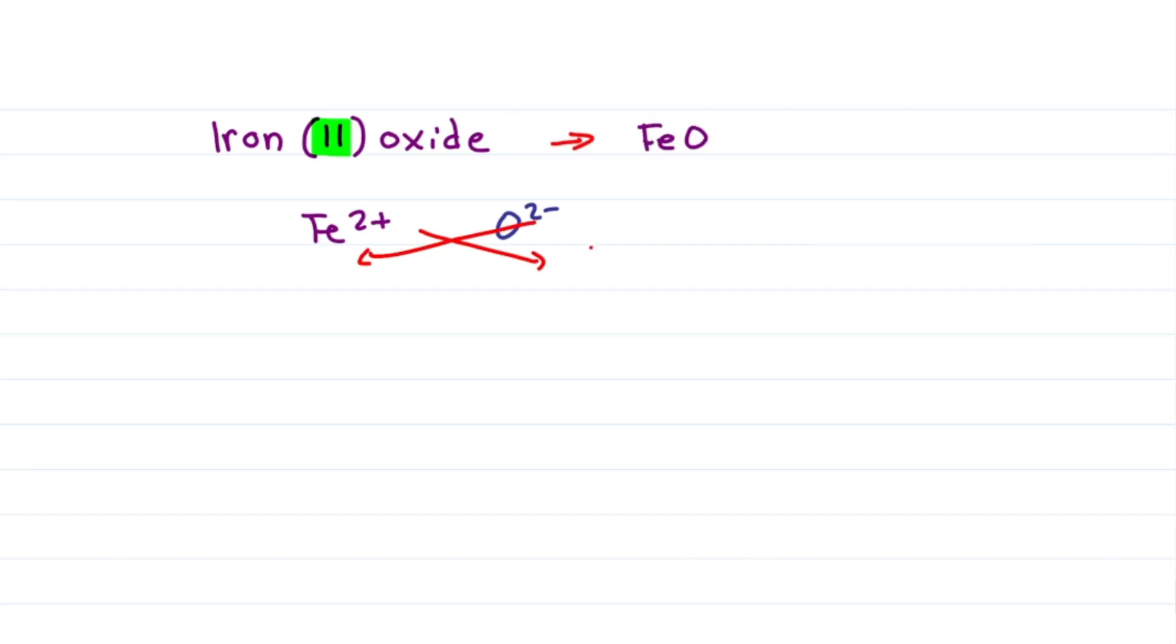You can also do the crisscross method. I get Fe2O2, but with ionic compounds it's not one atom to one atom. It's hundreds of atoms in that ratio, and so we always use the lowest possible number. In this case, divide them both by 2 and we get FeO.